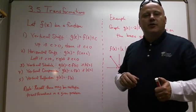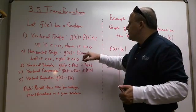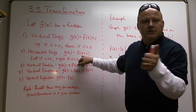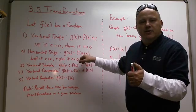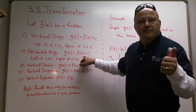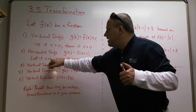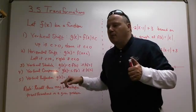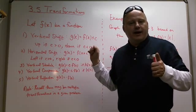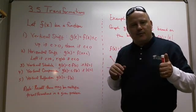Another type of transformation is called a horizontal shift. In this case, there is a c but the c is inside with the x. Since x runs horizontally, if c is inside with the x, it makes sense that it's going to affect the horizontal shift of that function. When that number is positive, it's going to go left; when that number is negative, it's going to go right. Kind of odd that it's that way, but it is.